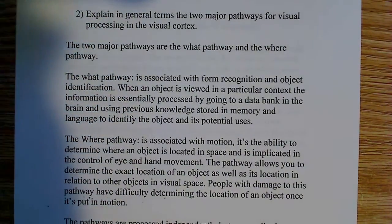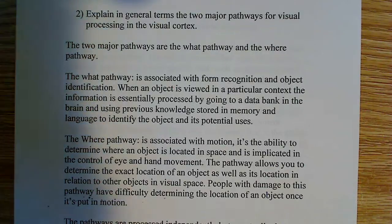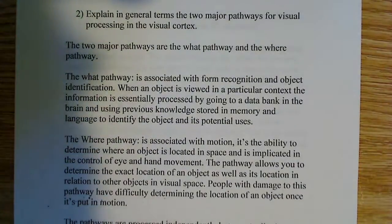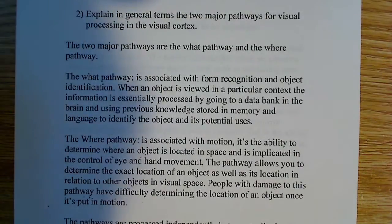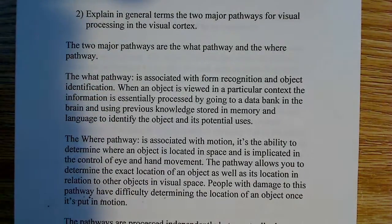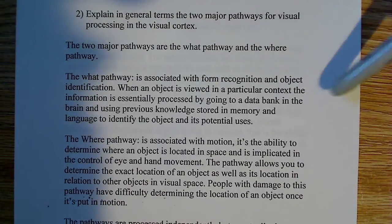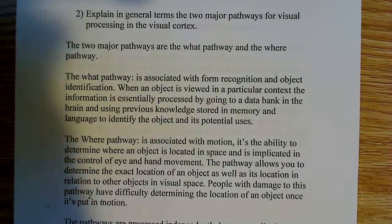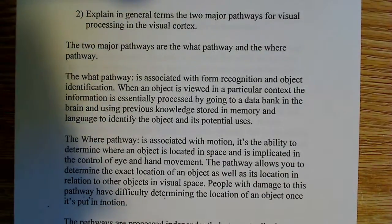The 'what' pathway is associated with form recognition — recognizing an object and being able to identify it. So, it's involved in form recognition and object identification. When an object is viewed in a particular context, the information is processed by the visual cortex, and we have to figure out what the object is. We proceed to a kind of data bank in our brain and use previous knowledge, stored memories, and language to identify and articulate what we're seeing.